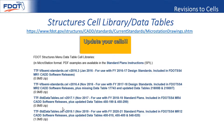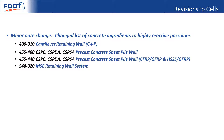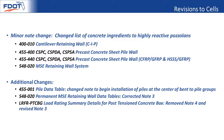We also made a change to the pile data table notes. We corrected note 3 for the permanent MSE wall data table and made changes to the post-tension load rating summary cell. Look at those cells and make sure you update them — that is one of the main reasons we also had to update our SPIs. These are the indexes that had the change for the highly reactive pozzolans, and these are the ones that also had other changes made.